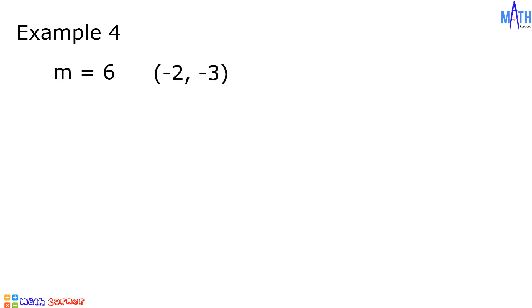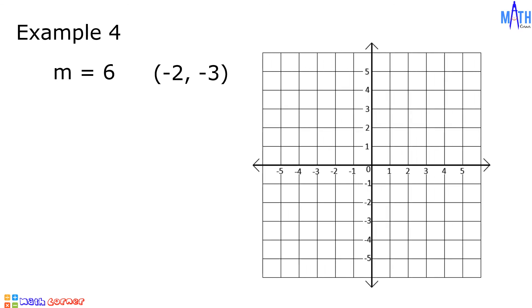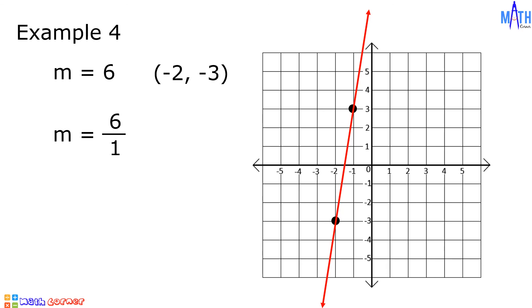Example number 4, let us graph a linear equation if the slope is 6 and it passes through the point (-2, -3). Let us plot (-2, -3): from the origin, move 2 units to the left and 3 units downward. Since the slope is 6, which equals 6/1, we move 6 units upward and 1 unit to the right to find the other point. Drawing a line through these two points gives the graph of the linear equation with slope 6 passing through (-2, -3).